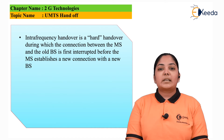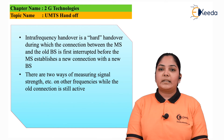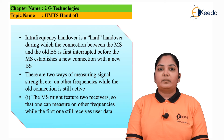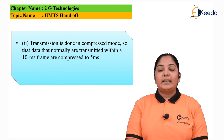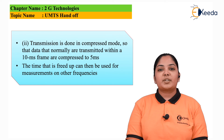Interfrequency handoff is a hard handoff, during which the connection between the mobile station and the old base station is first interrupted before the mobile station establishes a new connection with the new base station. There are two ways of measuring signal strength on other frequencies while the old connection is still active. The first method is that the mobile station has two receivers, so one can measure the other frequency while the other receiver is still receiving user data. The second method is compressed mode, where data transmitted in a 10-millisecond frame is compressed to a 5-millisecond frame, and the remaining 5 milliseconds can be used for measurement of other frequencies.